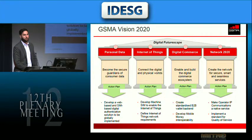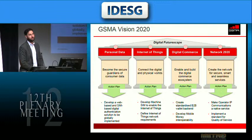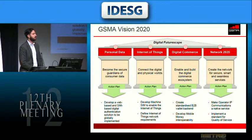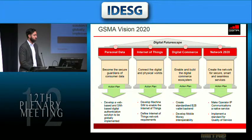Internet of Things is what we call connected living — machine to machine — so having a smart car, smart utility, smart fridges, et cetera. Digital commerce looks at the mobile payments world and how MNOs can play a role. Network 2020 is our backbone, looking at how we prepare networks for the future, including IP-based networks. But the one that has grown from a fledgling program a couple of years ago to the biggest program by far is mobile identity, which has been identified by our board — made up of CEOs of some of the largest mobile carriers in the world — as one of the most important areas to focus on.